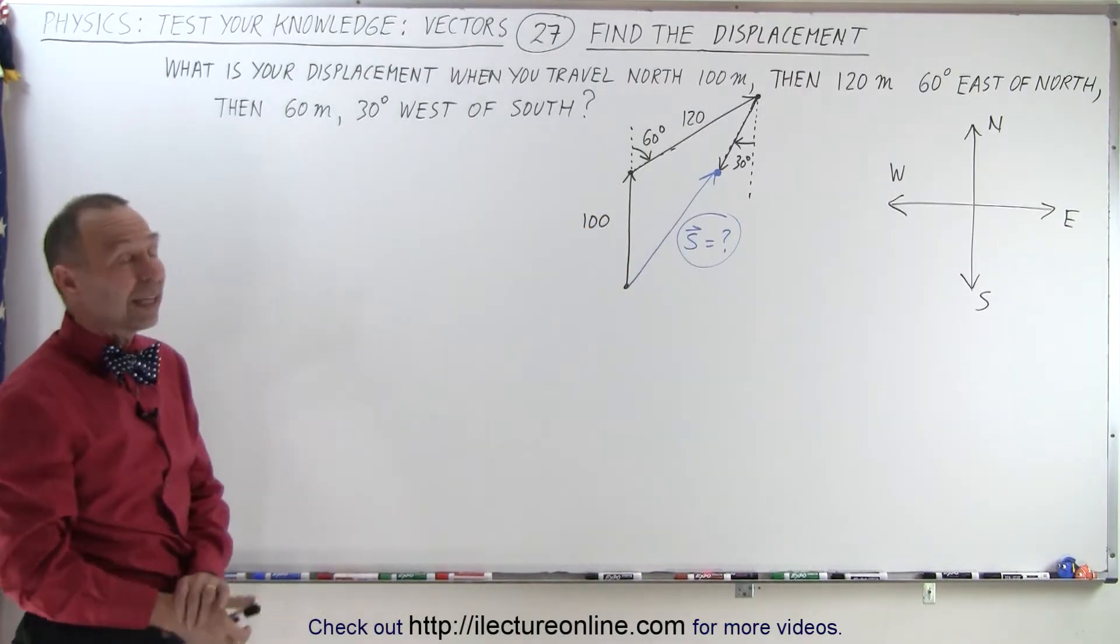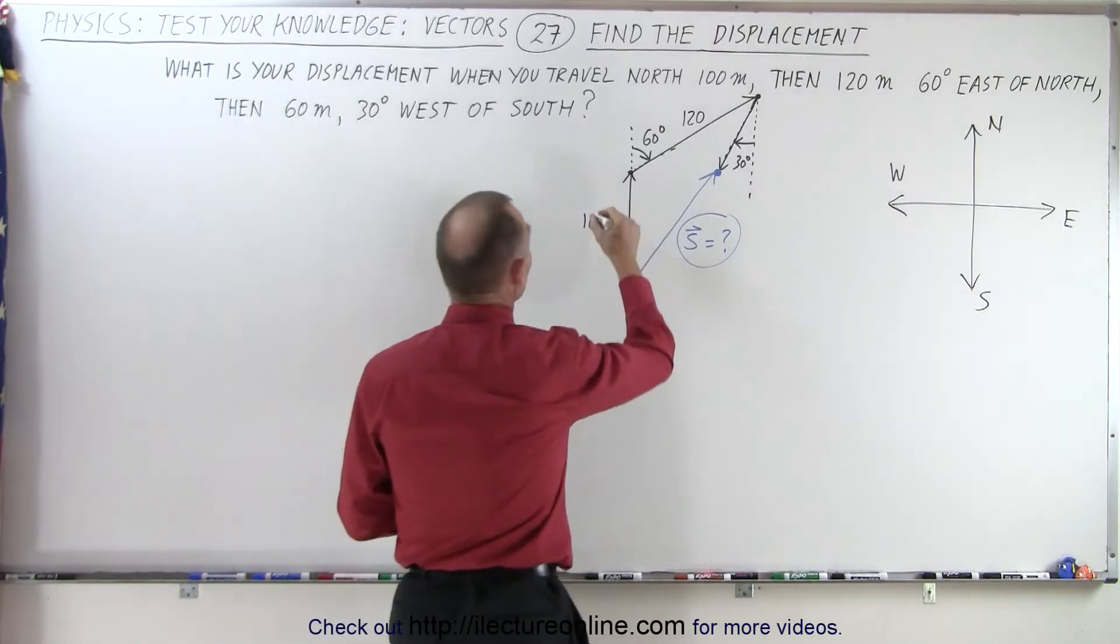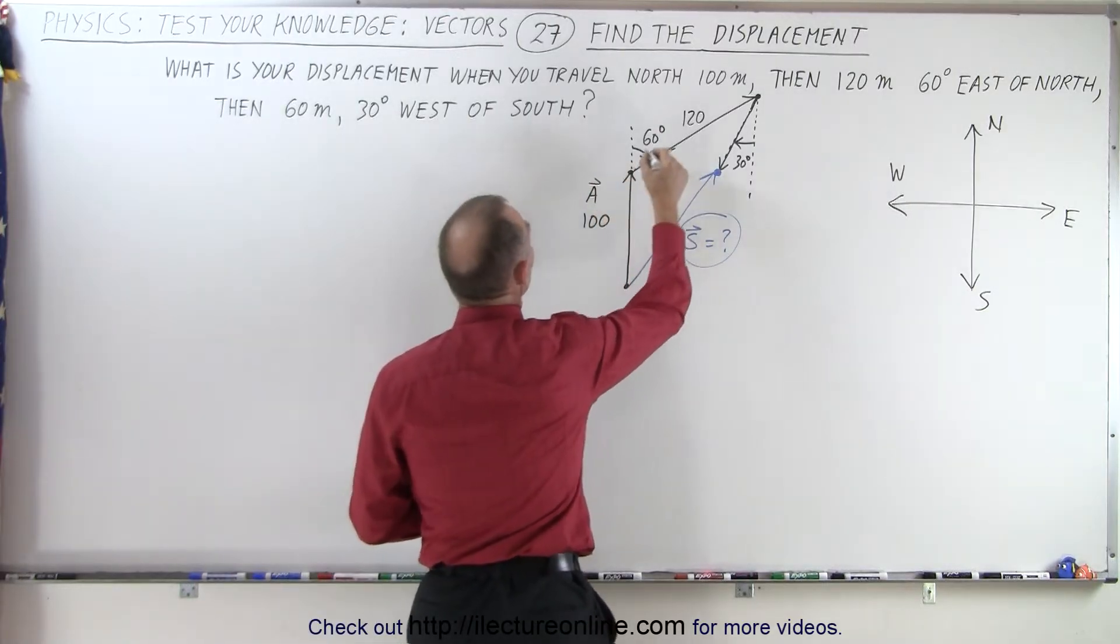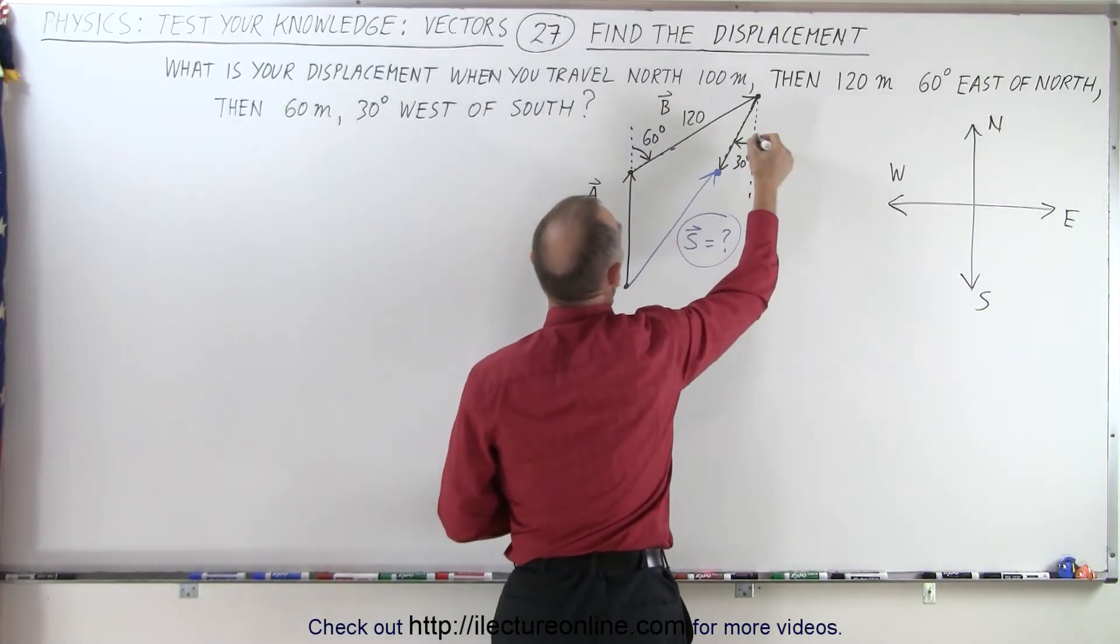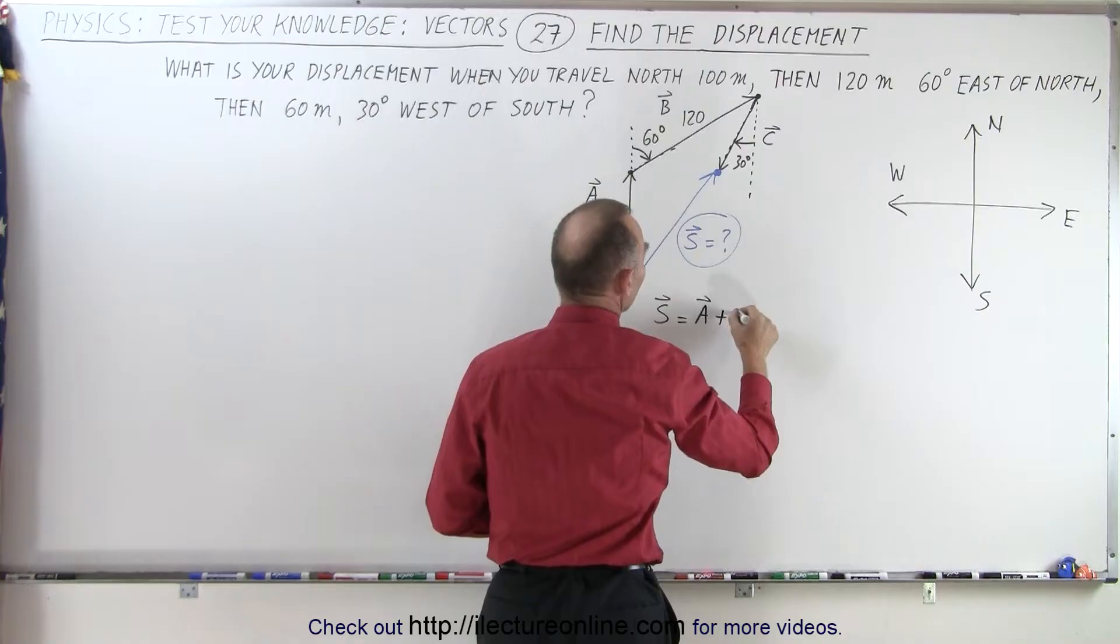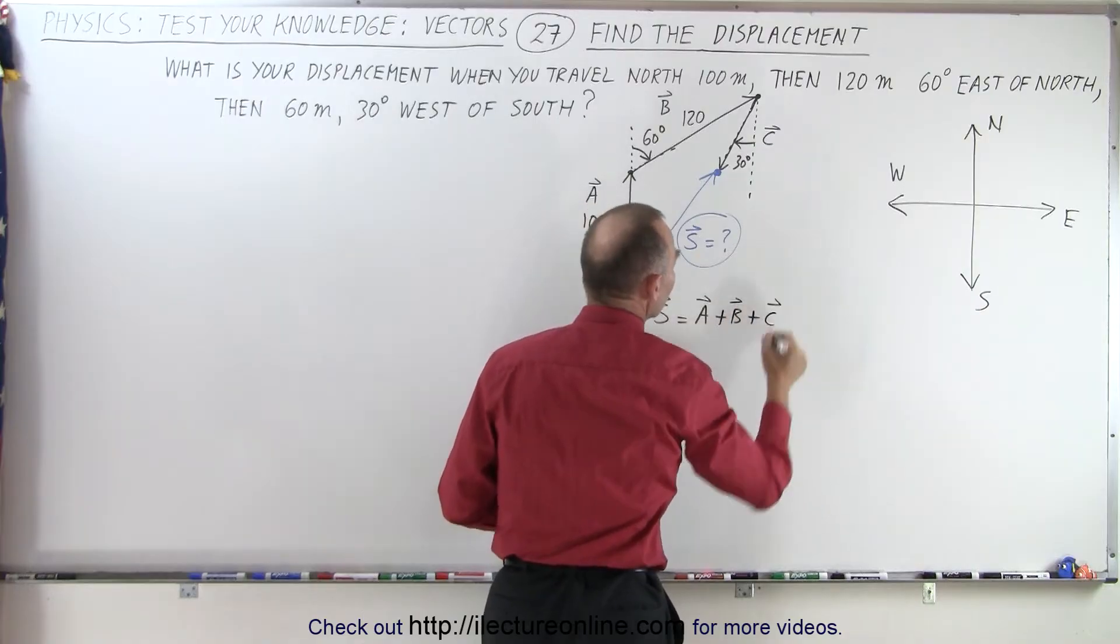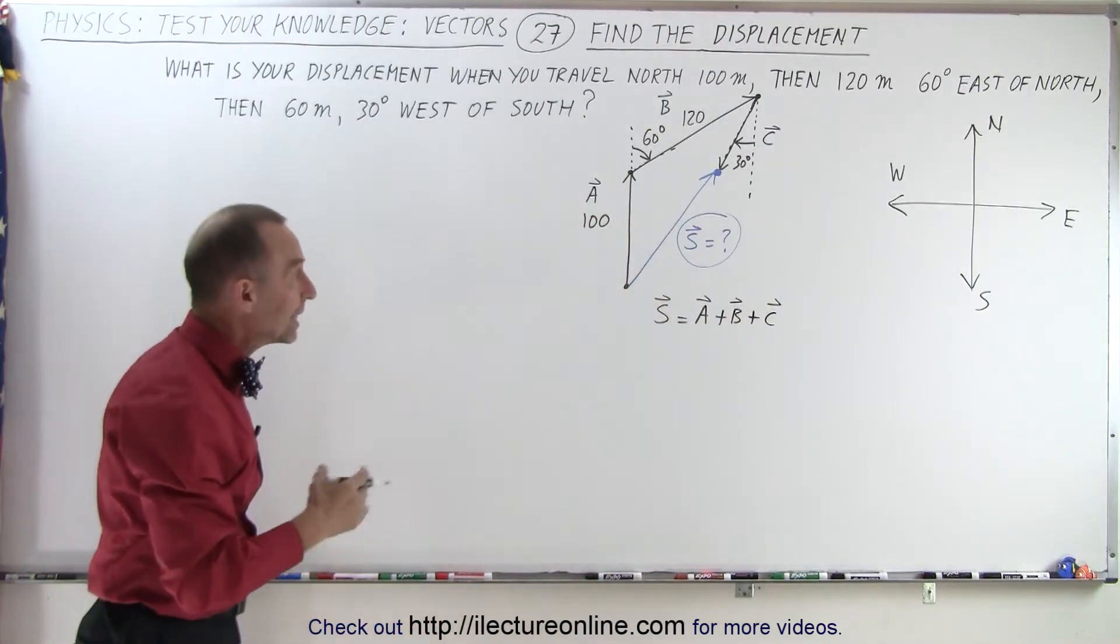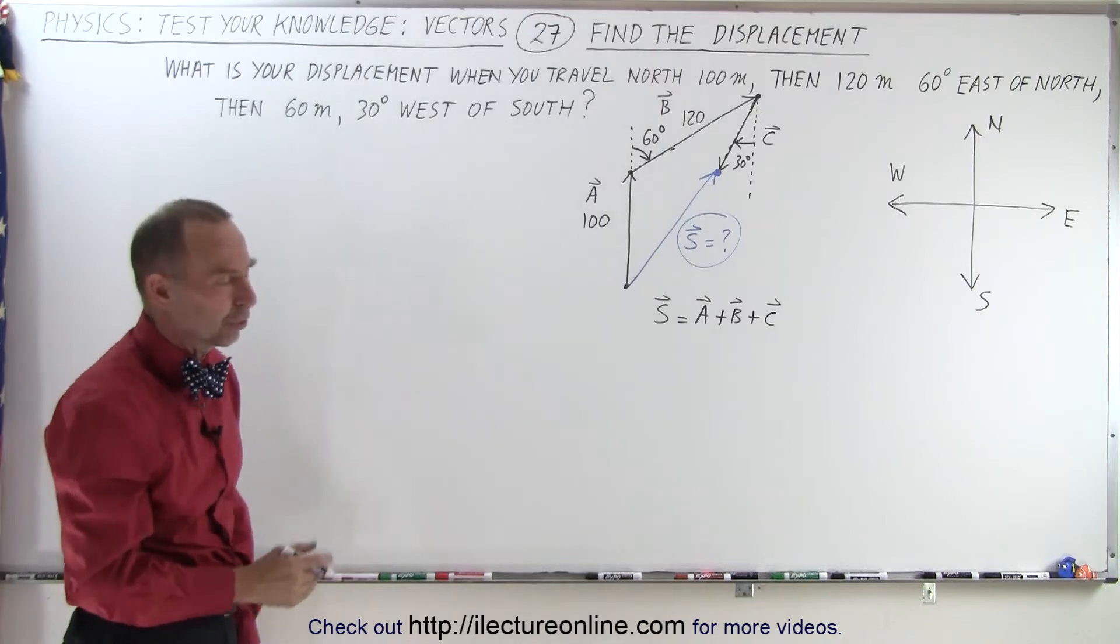In essence, we can think of this as being three vectors. We can think of this as vector A, this is vector B, and this is vector C. And so therefore, the displacement vector is simply the sum of A plus B plus C. And if we're going to add vectors together, we need to add their X and Y components.